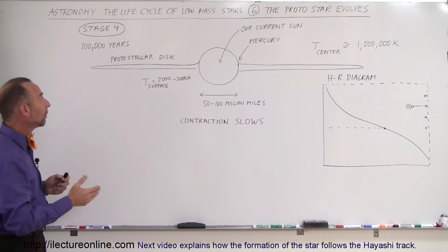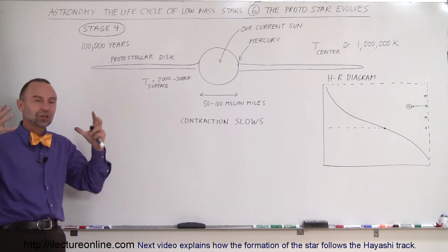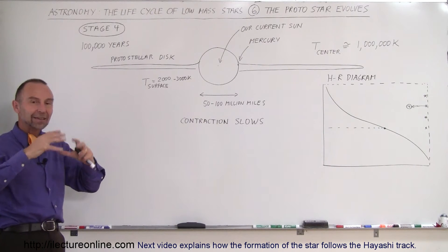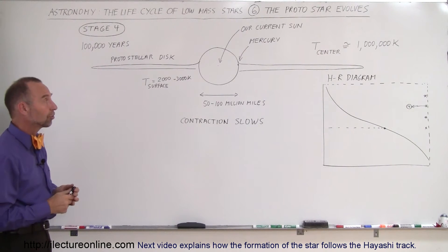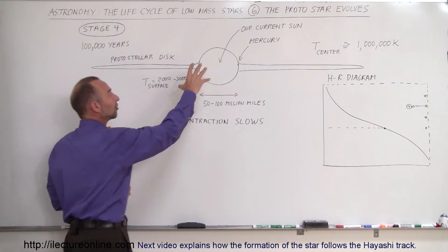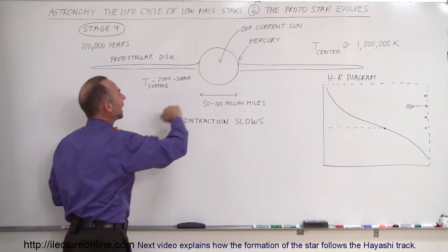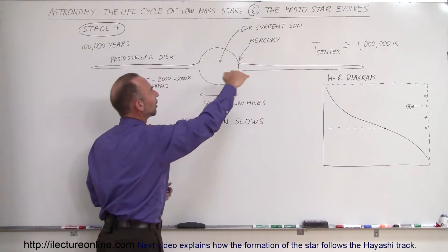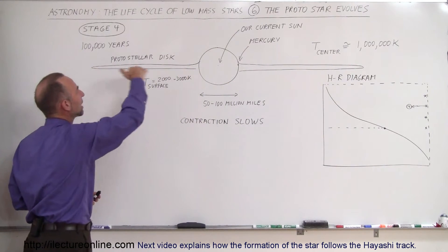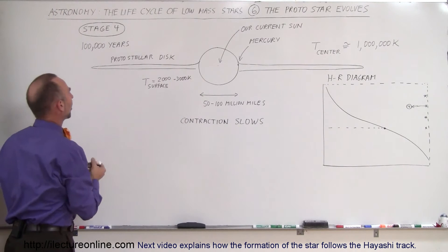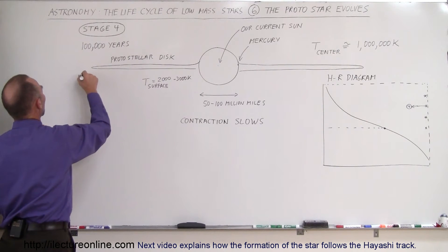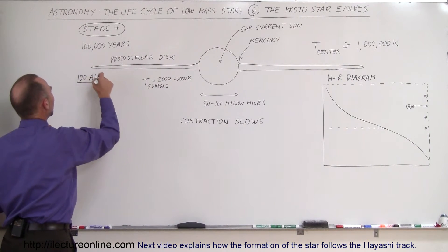But now at this stage, stage 4, about 100,000 years after the collapse of the cloud of dust and gas that eventually formed the star in the solar system, we now can see a very distinct shape, a spherical-shaped object that is now the protostar, and we have what we call the protostellar disk that goes out for many astronomical units, probably as much as 100 astronomical units out away from the star.